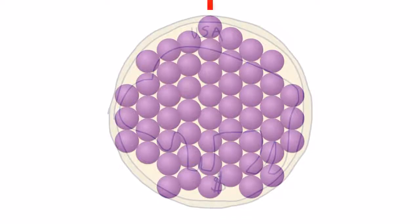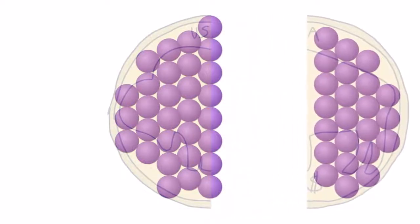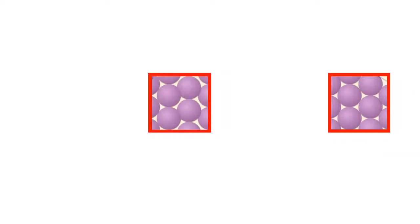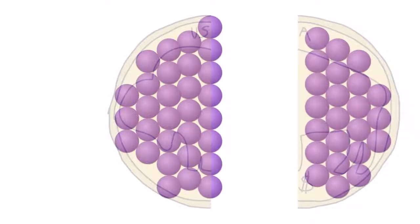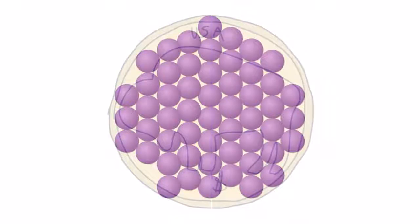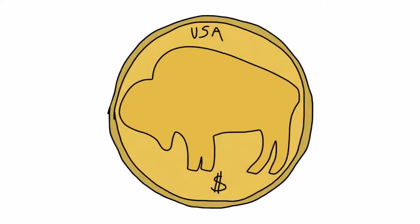When cut in half, the tightness of the atoms does not change. Whether you have half of a coin or a complete gold coin, the density stays the same.